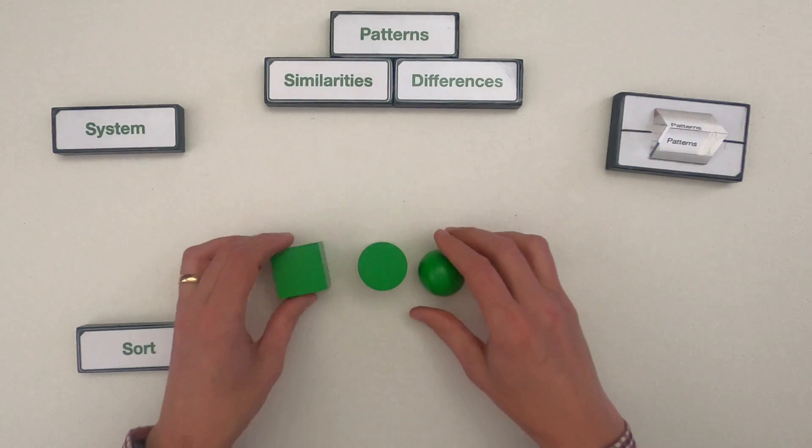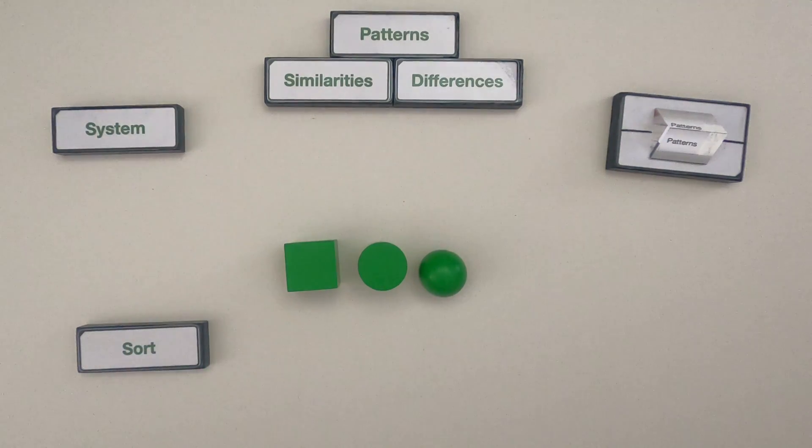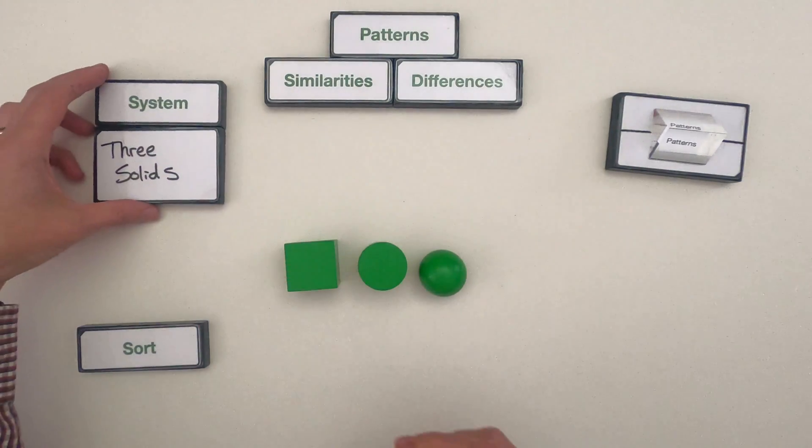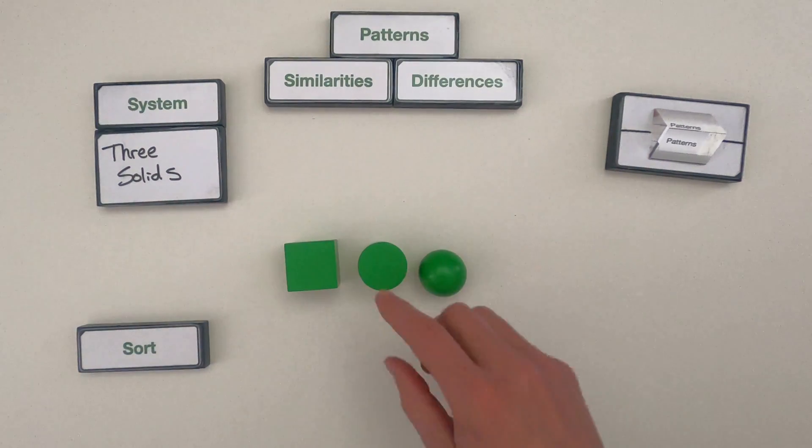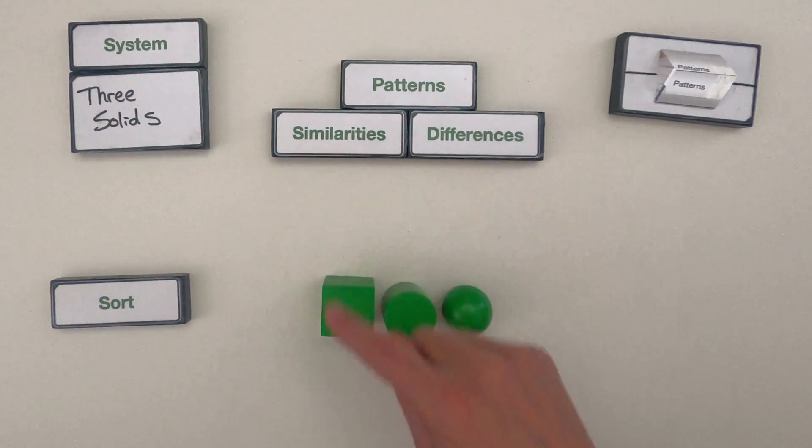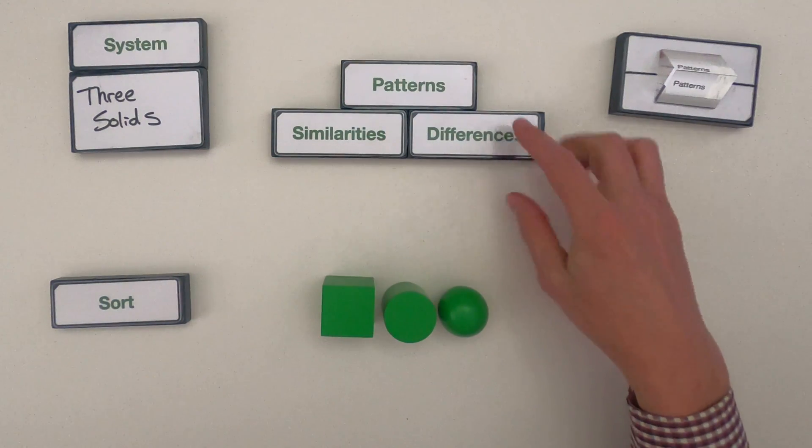So the first thing you should always do when you're looking at a system is define the system. Okay, so we're gonna be looking at the system of these three solids. And what we're looking for are just patterns. How are these three solids similar? And how are they going to be different?